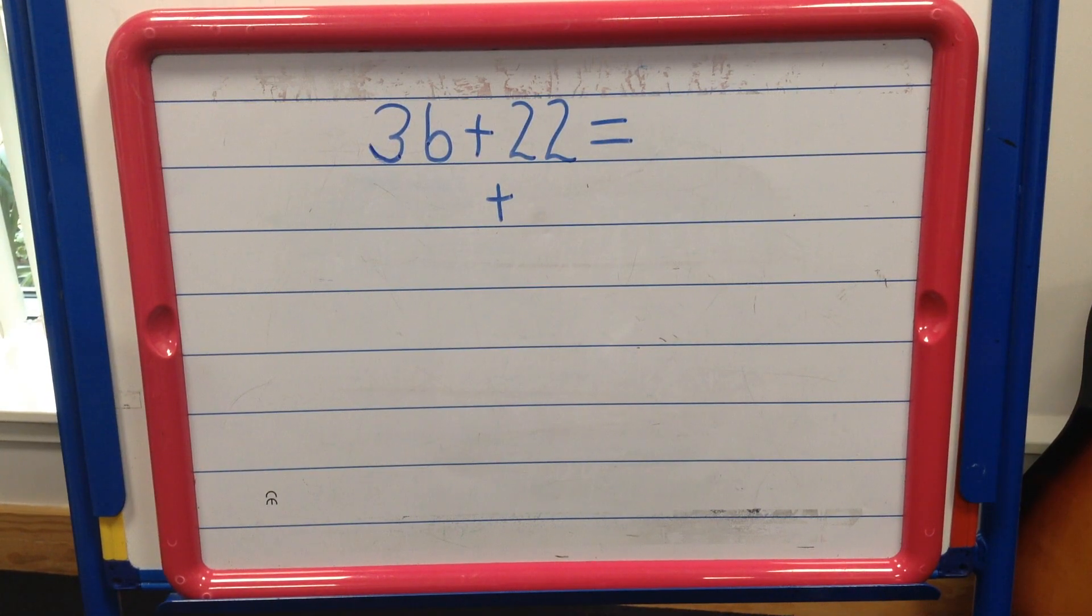This video is aimed at the parents of children in primary 3 to 7. In this video, I will explain how to use the NumberTalks strategy of breaking each number into its place value to support your child's learning in addition calculations.